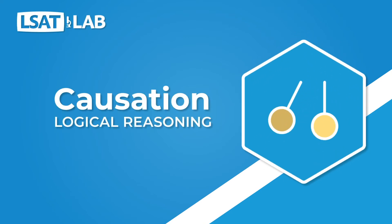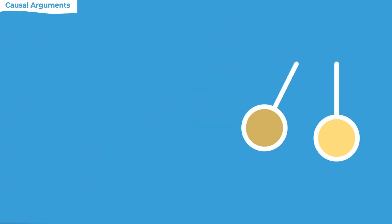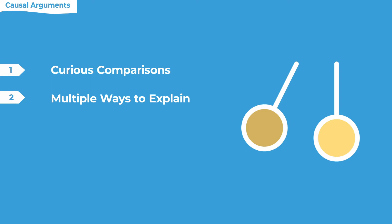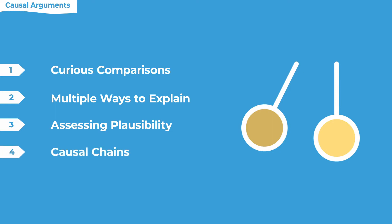Hi, this is Patrick from LSAT Lab. We're here to talk about causation in the Logical Reasoning section. A lot of times causation is set up by some sort of curious comparison, a curious fact, and usually there are multiple ways to explain that, but the author picks one way. We need to be good at assessing the plausibility of the author's hypothesis. And then in other problems, we're going to be responsible for putting together a chain of causality.